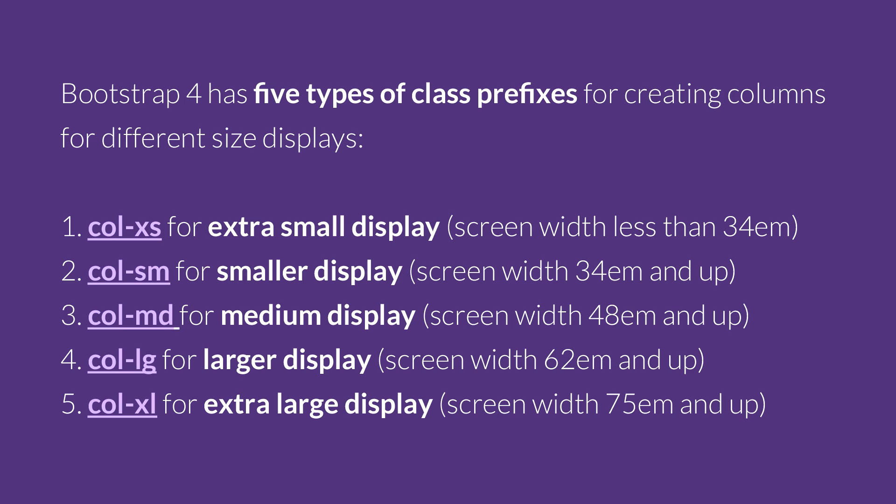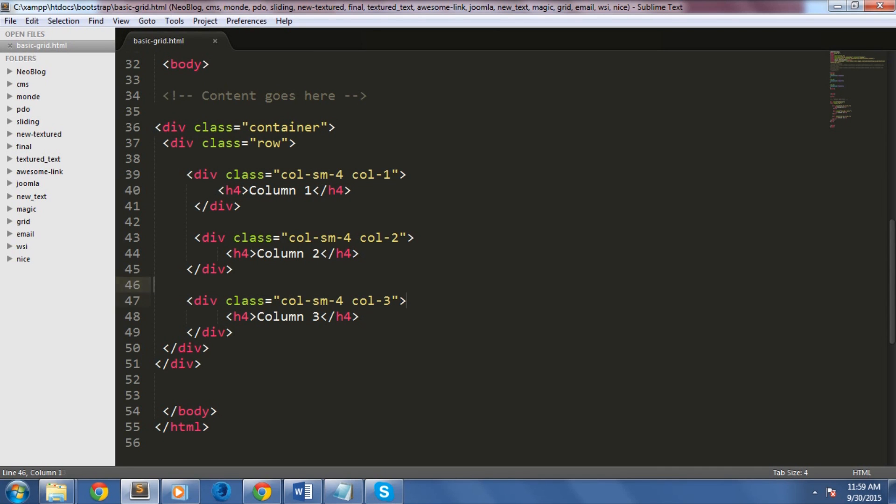Before we move on, let's talk about the five types of class prefixes we can use to create columns in Bootstrap 4. The first one is col-xs for extra small display, covering screen widths of less than 34 ems. The second is col-sm for smaller display, covering 34 ems and up. The third is col-md for medium display, covering 48 ems and up. The fourth is col-lg, covering 62 ems and up. The last one is col-xl for extra large display, covering 75 ems and up.